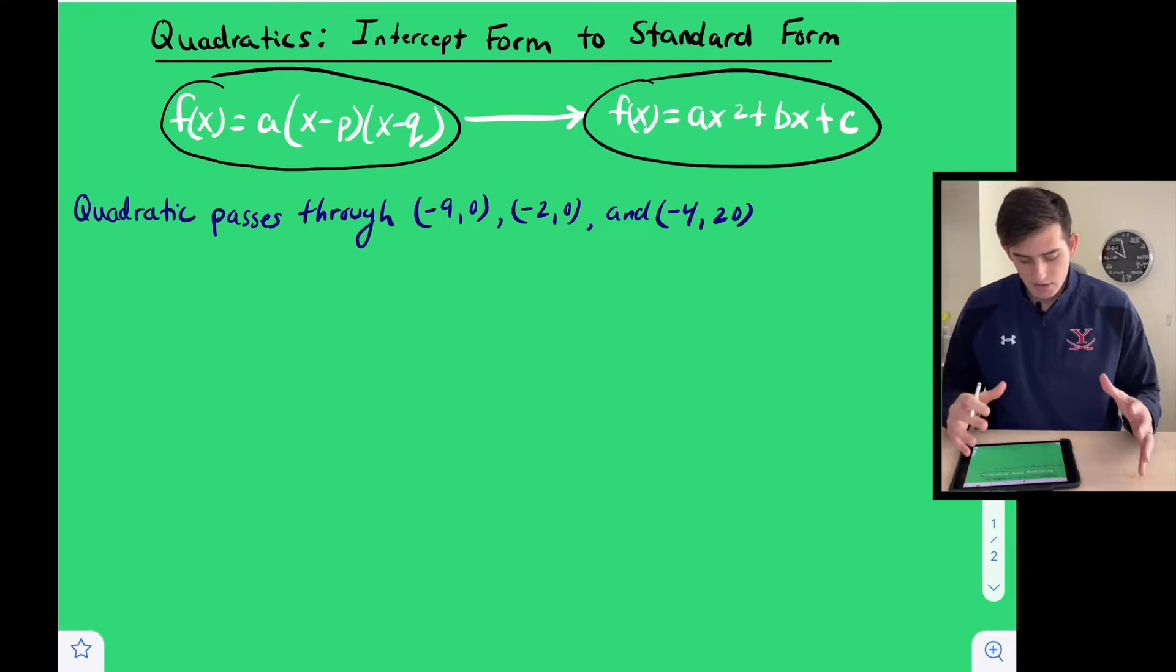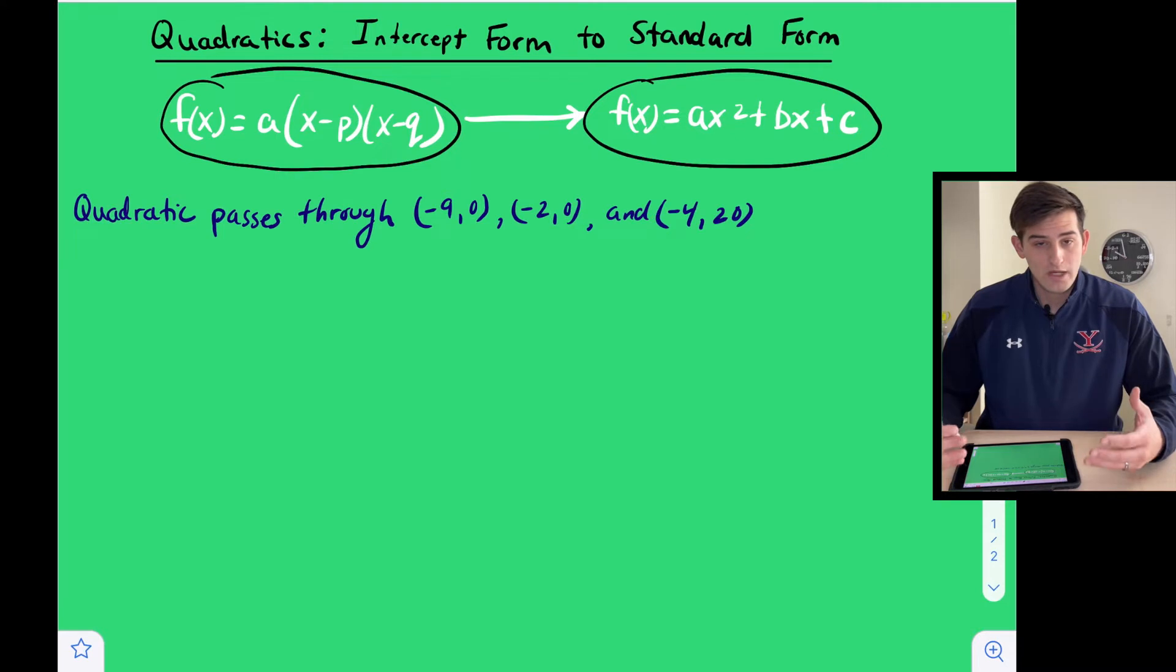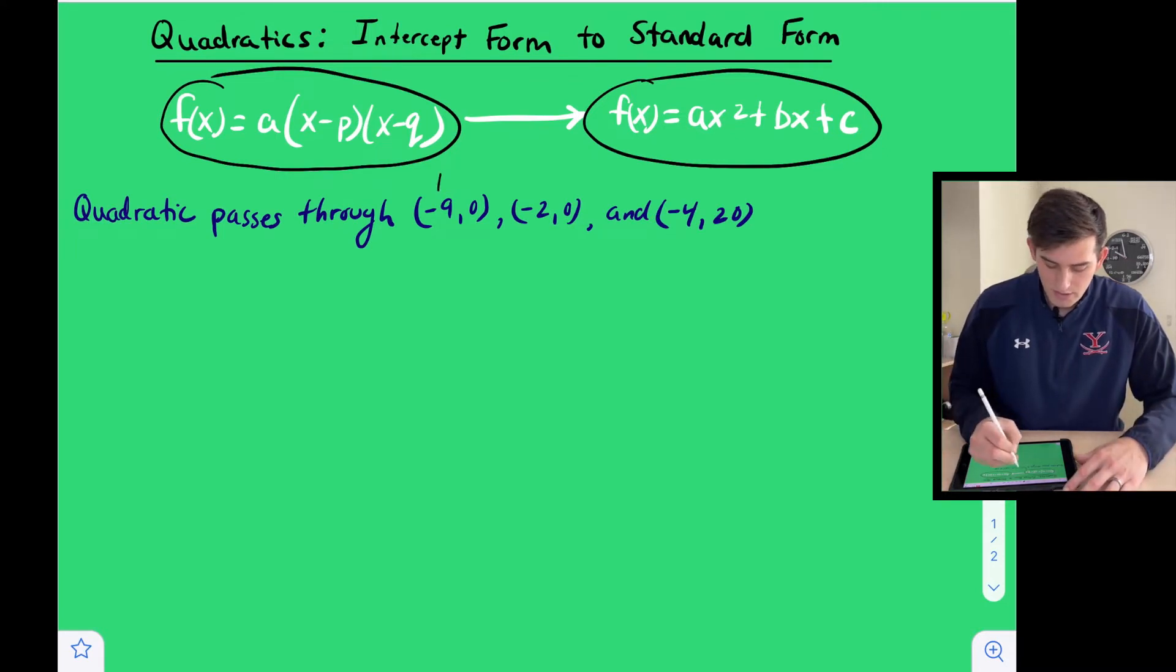So we start with this question: the quadratic passes through negative nine zero, negative two zero, and negative four twenty. So the two points that have a y-coordinate of zero, those are our x-intercepts. So we can plug those in for p and q.